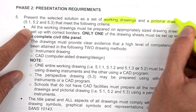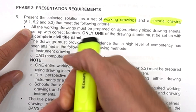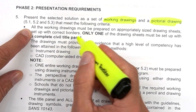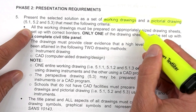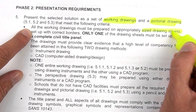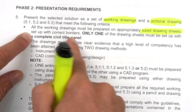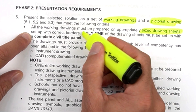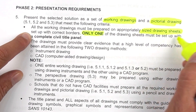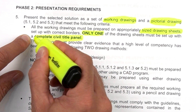You also need to do a pictorial drawing, which will be your two-point perspective, and they are defined below in this document at 5.1 to 5.3. All the working drawings must be prepared on appropriately sized drawing sheets — that's going to be A3 for all of you — set up with correct borders. Only the first drawing sheet must be set up with a complete civil title panel.